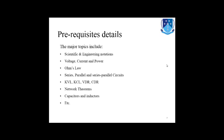Voltage can be termed as potential difference, current can be defined as the flow of charge or flow of electrons, and power is the product of voltage and current: P = V × I.